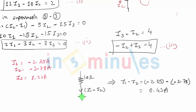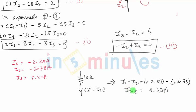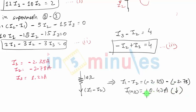If we had taken the upward direction, we would have done I2 minus I1, which gives minus 0.43 amperes — that would also be a correct answer considering the stated direction. So I10-ohm is 0.43 amperes in the downward direction, or equivalently minus 0.43 amperes in the upward direction. Both are exactly correct answers.